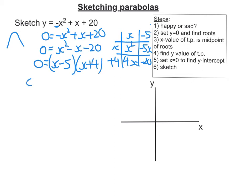So either the first bracket is 0, or the second bracket is 0. So we're going to get x equals 5, or x equals negative 4. So negative 4, say it's about here, and 5, we can say it's about here.